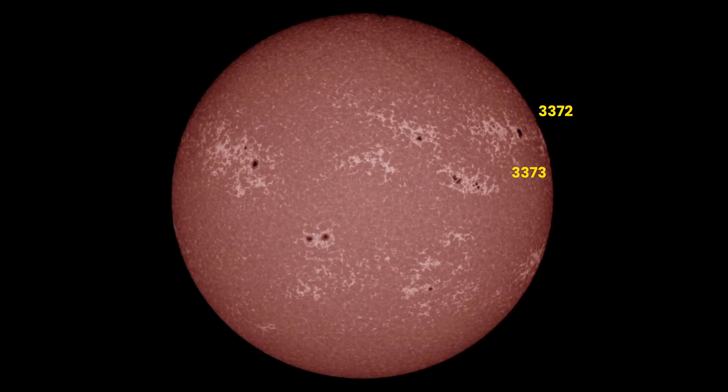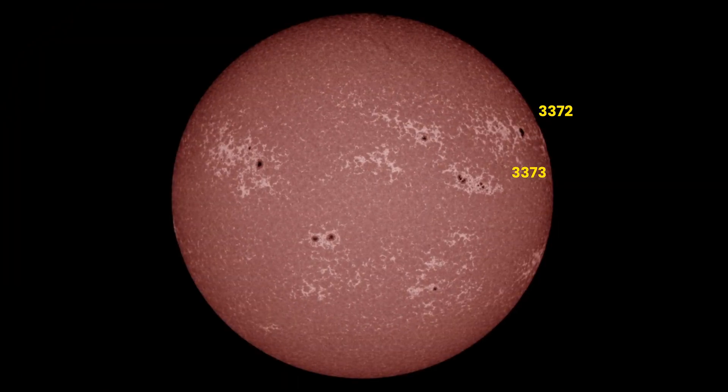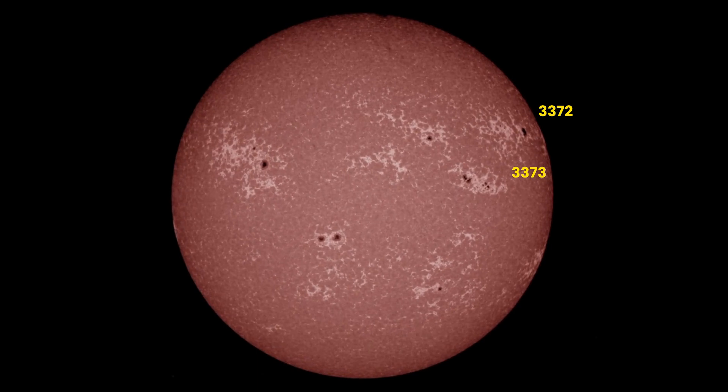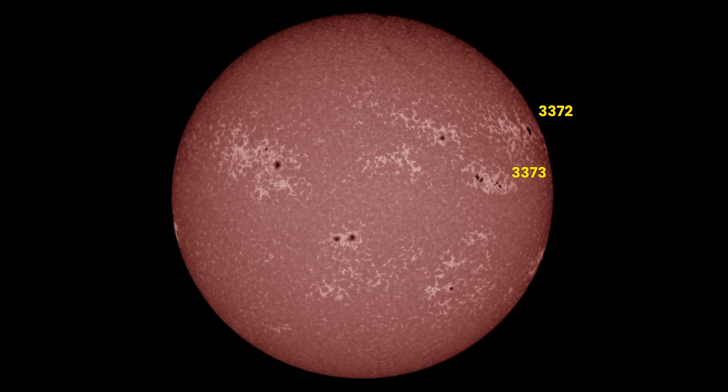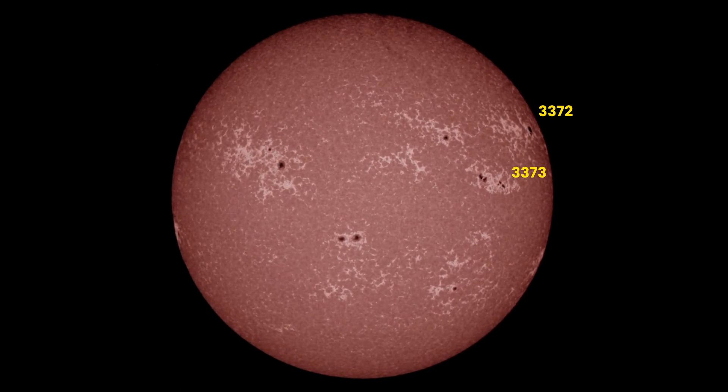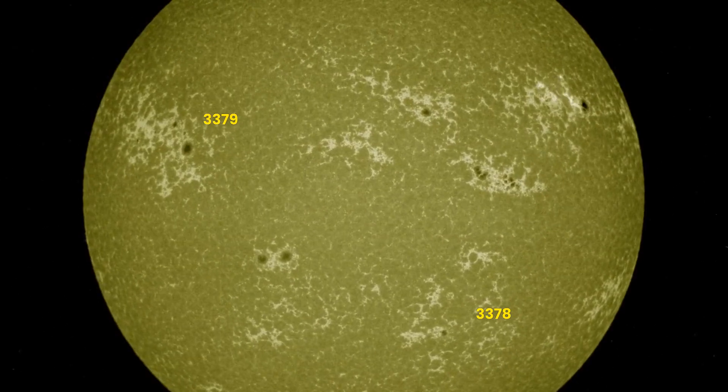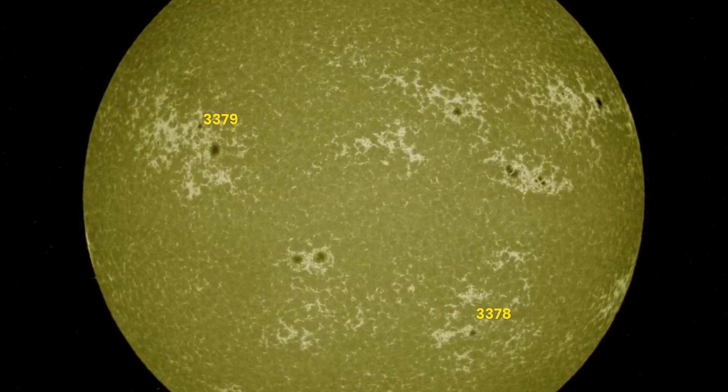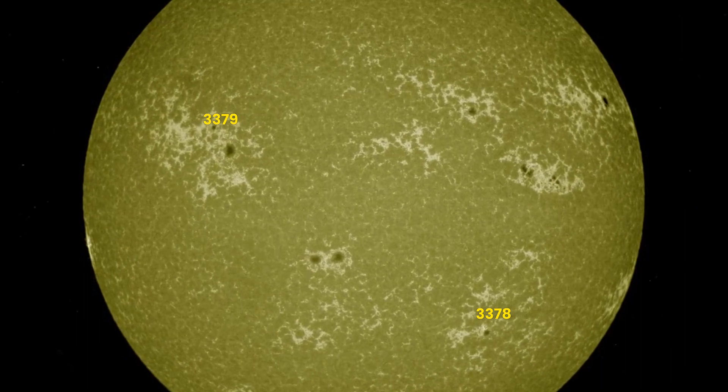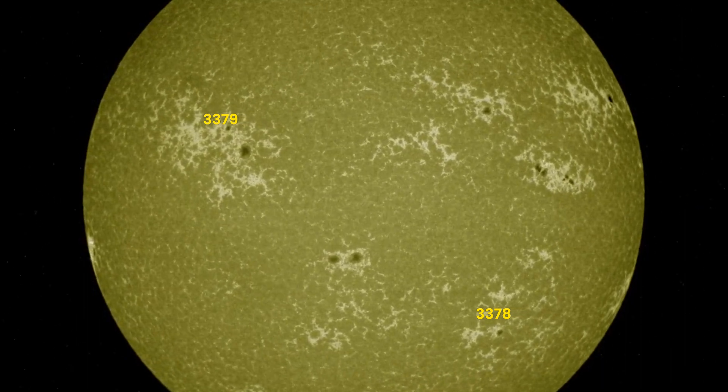Some separation and decay were observed in Region 3373, while Region 3372 produced a C2.6 flare and showed slight decay. Regions 3378 and 3379 also exhibited slight decay, but the rest of the spotted regions remained relatively stable.